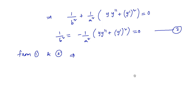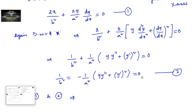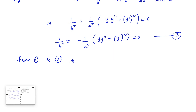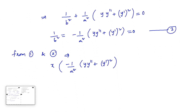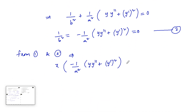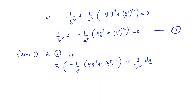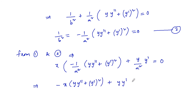Now from equation 1 and the first derivative equation, we substitute 1/b² = −(1/a²)[y·y″ + (y′)²] into x/b² + y/a² · y′ = 0. This gives x · (−1/a²)[y·y″ + (y′)²] + (y/a²)·y′ = 0. Taking LCM a², we get −x[y·y″ + (y′)²] + y·y′ = 0.